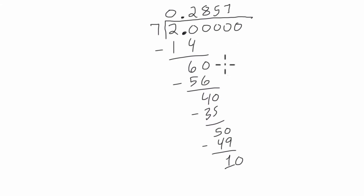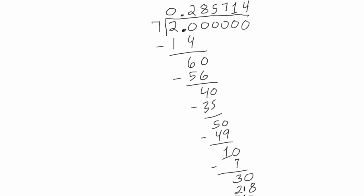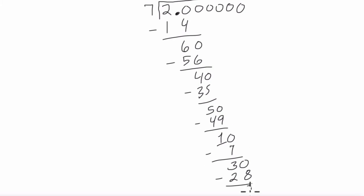7 goes into 10 one time. 7 times 1 is 7. 10 minus 7 is 3. Does 7 go into 3? Well, it goes into 30. It goes into it 4 times. 7 times 4 is 28, and 30 minus 28 is 2.